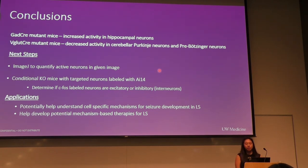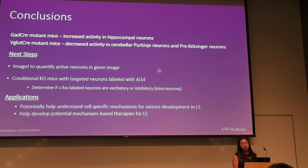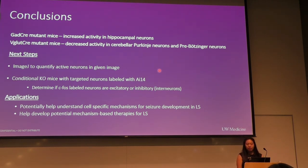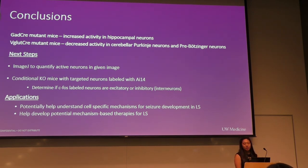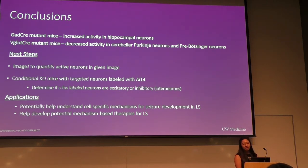The next steps in this experiment include utilizing ImageJ, which is a cell-counting software, to quantify the amount of active neurons in a given image. To help us determine if cFOS-labeled cells are excitatory or inhibitory neurons, we will use conditional knockout mice where targeted neurons are labeled with TD-Tomato using AI14. TD-Tomato is a fluorescent marker that will cause the interneurons to fluoresce red. We can then compare the cFOS-labeled images with the TD-Tomato expression and categorize the cFOS-labeled cells into either inhibitory or excitatory neurons. These results will potentially help understand the cell-specific mechanisms for the development of seizures in Leigh syndrome, as well as help develop potential mechanism-based therapies for those with Leigh syndrome.